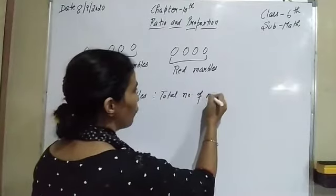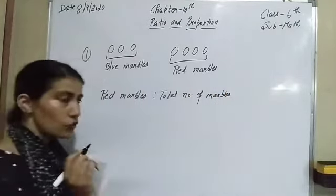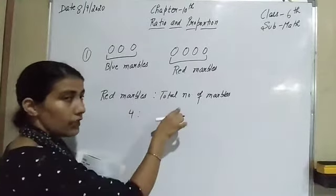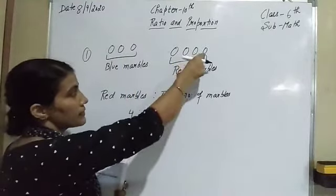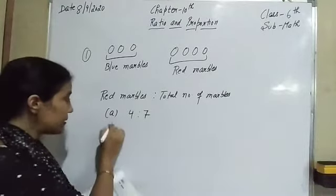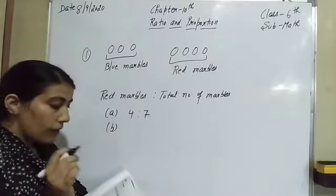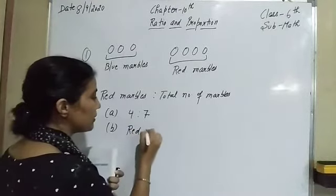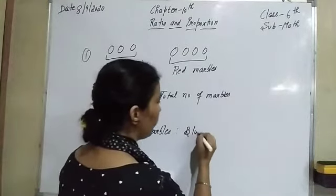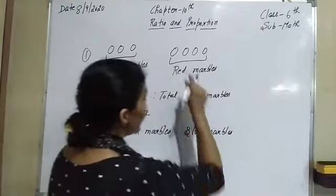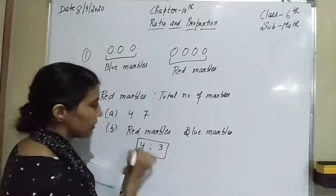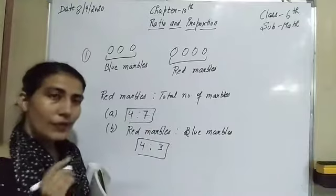We just have to find out its ratio. Red marbles — counting: 1, 2, 3, 4 — that means 4. Total number of marbles — counting: 1, 2, 3, 4, 5, 6, 7 — that means the ratio is 4 ratio 7. That is the first part. Now in the second part, the ratio of number of red marbles to blue marbles. Red marbles are 4, so here is 4 ratio, and blue marbles are 3. So 4 ratio 3 is our required answer.